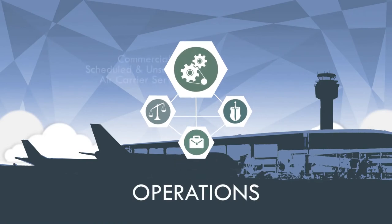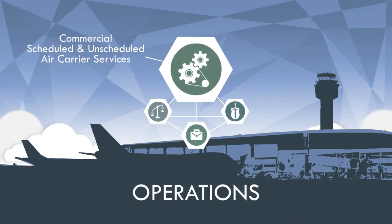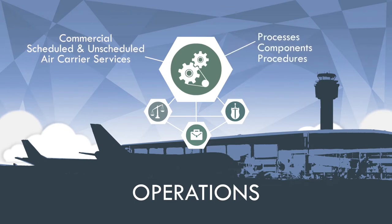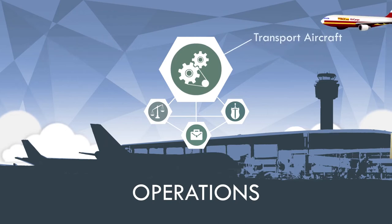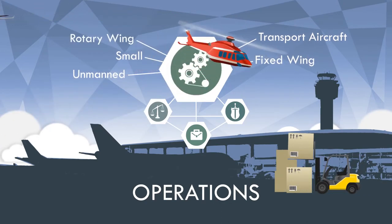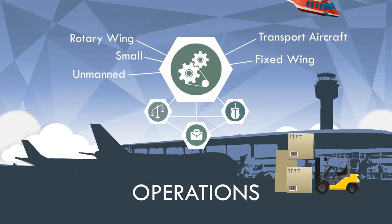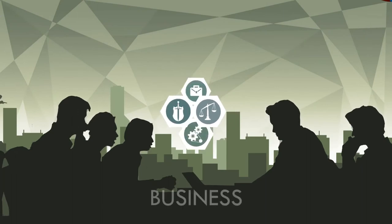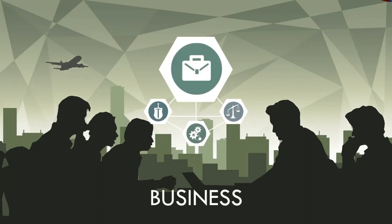Operations refers to the commercial, scheduled, and unscheduled air carrier services. It also includes the processes, components, and procedures unique to cargo operations and facilities. Aircraft categories such as transport, small, unmanned, fixed wing, and rotary wing are also associated with operations.